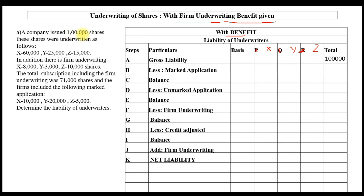Part A — with firm underwriting benefit given. For gross liability, the company wants to issue 1 lakh shares, distributed as 60,000, 25,000 and 15,000. The ratio simplifies to 12:5:3. That is step one.